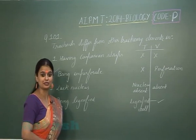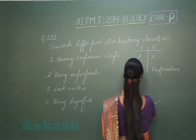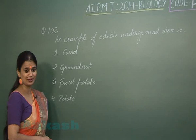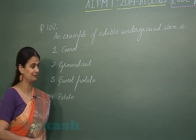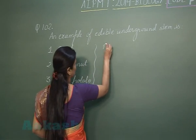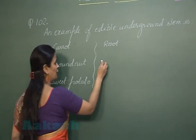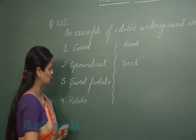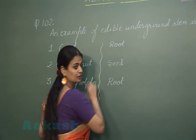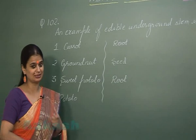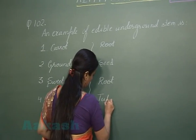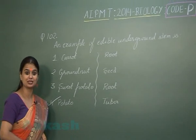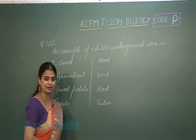Let's discuss question number 102. We have to see which of the following plants has an edible underground stem. In the case of carrot, the edible part is the root. In groundnut, the seeds are edible. In sweet potato, the edible part is also the root. In potato, the edible part is the underground stem, also known as a tuber. So the answer is option number four.